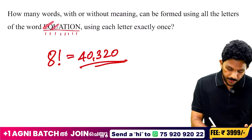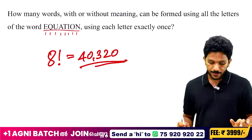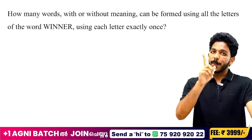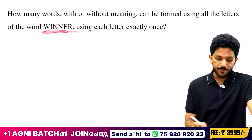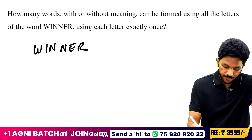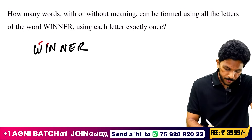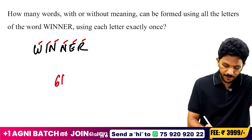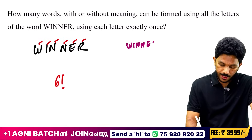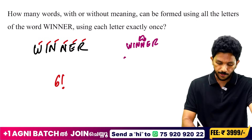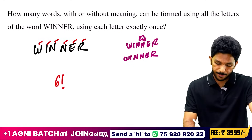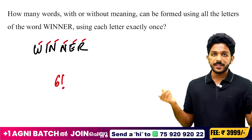Correct. Now I have a word with repeated letters — WINNER: W-I-N-N-E-R. There are 6 letters total. Because N repeats twice, if we swap the two N's, we get the same word. So the arrangements are not all distinct. We divide by 2! for the repeated N.